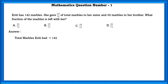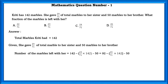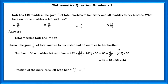Total marbles Keethi had is equal to 142. She gave 24/71 of total marbles to her sister and 50 marbles to her brother. So, the number of marbles left with her is equal to 44 marbles. Since they have asked in fraction, 44/142, which is also equal to 22/71.